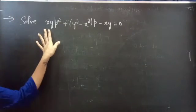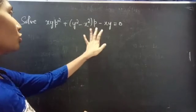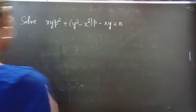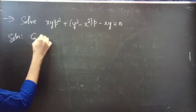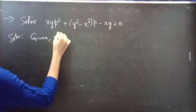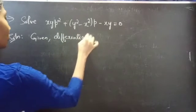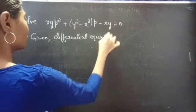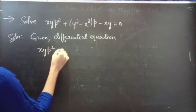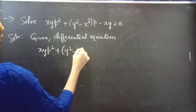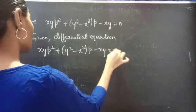Problem: solve x·y·p² + (y² - x²)·p - x·y = 0. Solution. Given differential equation: x·y·p² + (y² - x²)·p - x·y = 0.